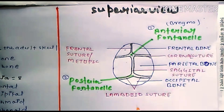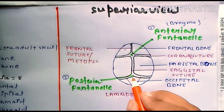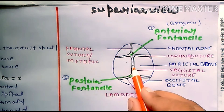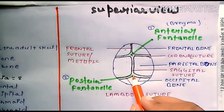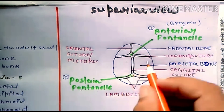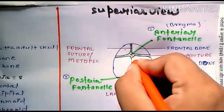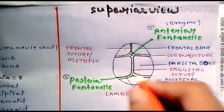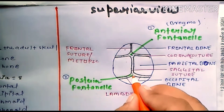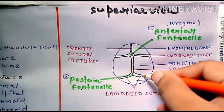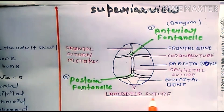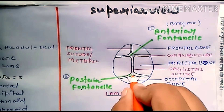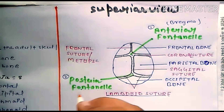For the posterior fontanelle, it is at the junction of the sagittal suture on the posterior side with both of the lambdoidal sutures. This junction of the sagittal suture and the lambdoidal sutures is called lambda. So the posterior fontanelle is also called lambda.